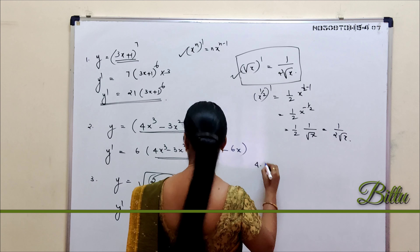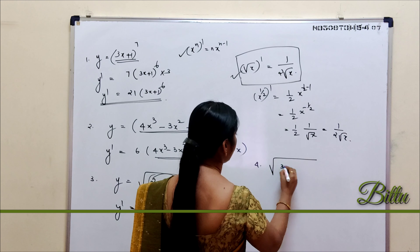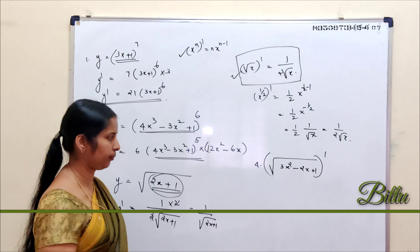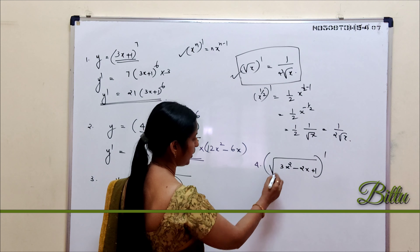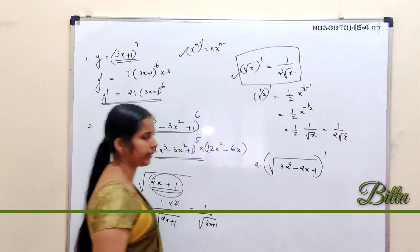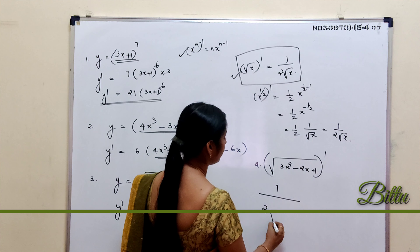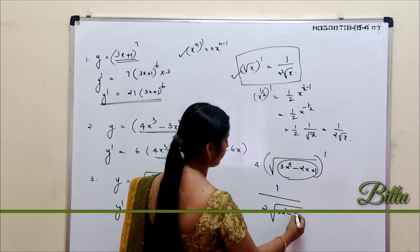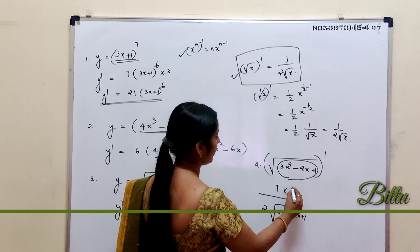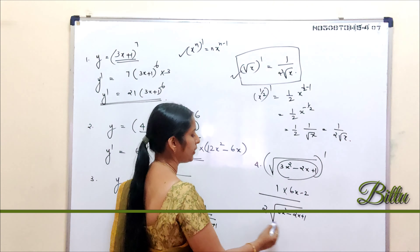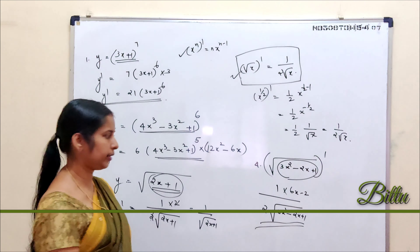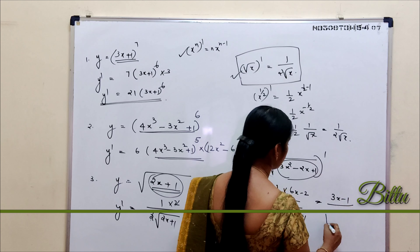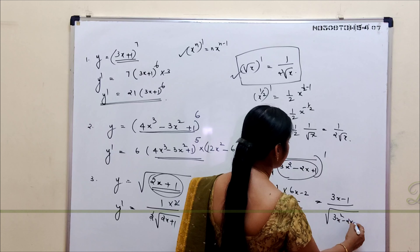Next, consider the function y = √(3x² − 2x + 1). Its derivative: since it is in the form √x, and the derivative of √x is 1/(2√x), here in place of x we have 3x² − 2x + 1. So the derivative is 1/(2√(3x² − 2x + 1)) multiplied by the derivative of 3x² − 2x + 1, which is 6x − 2. After simplification, this gives y' = (3x − 1) / √(3x² − 2x + 1).